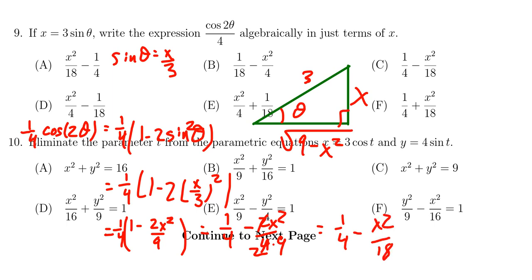And so we see that the correct answer would then be choice C, one-fourth minus x squared over 18.